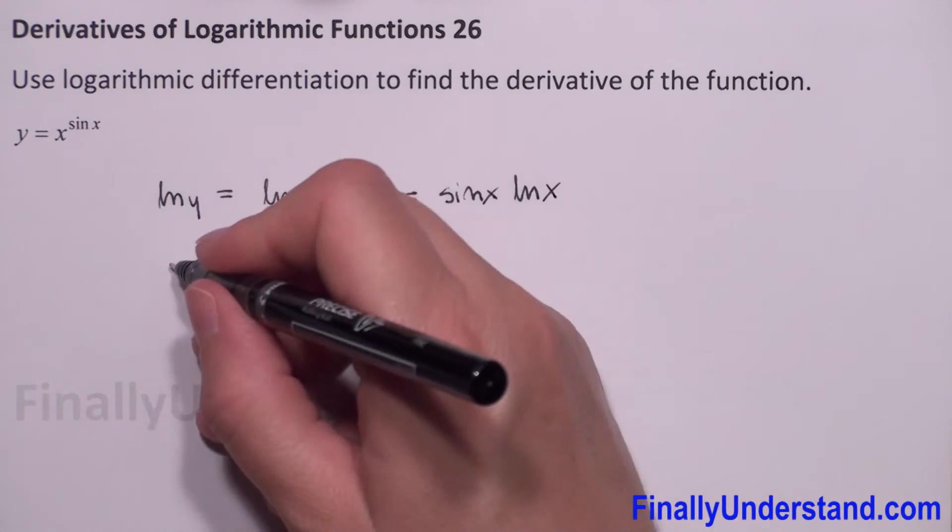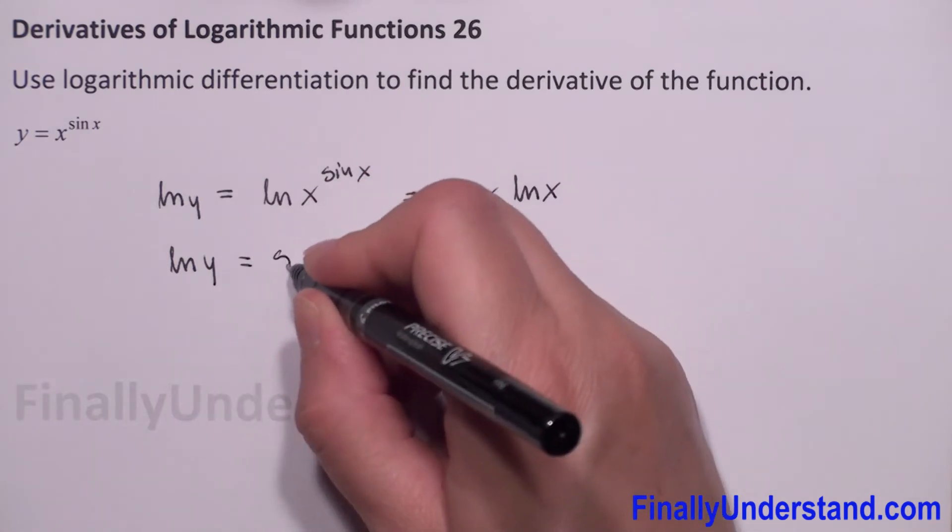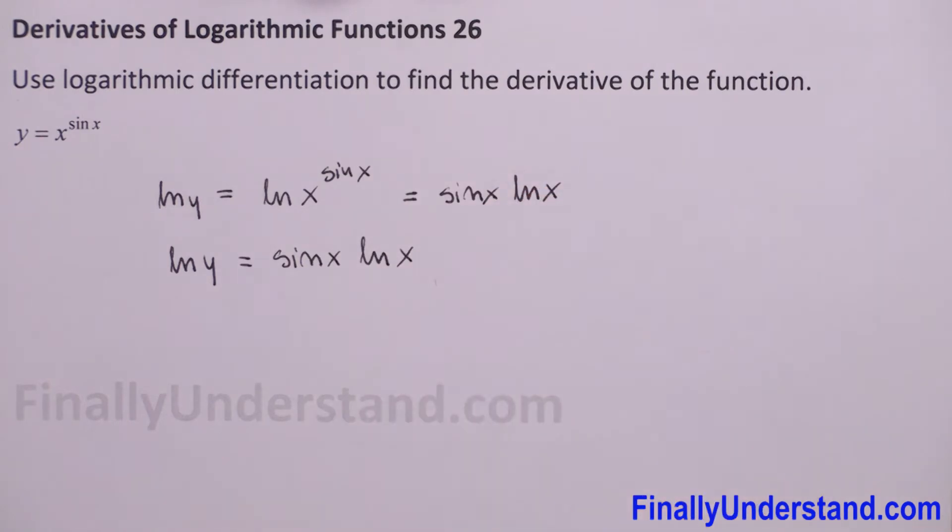So we got equation natural log of y is equal sine of x times natural log of x. Now we will take derivative of both sides of our equation.